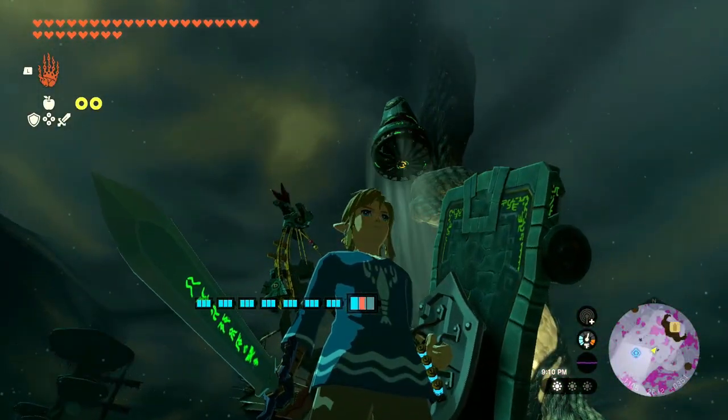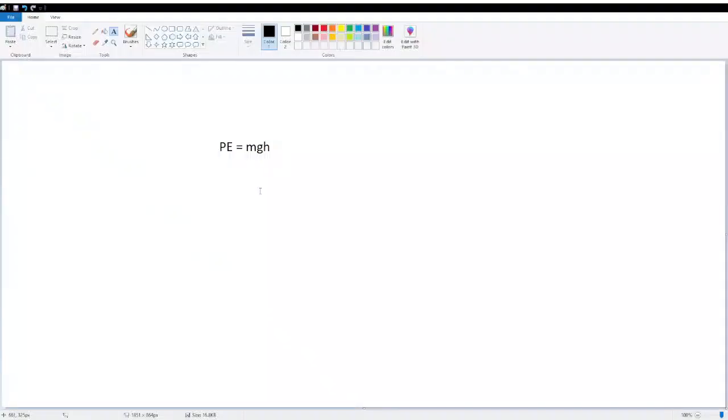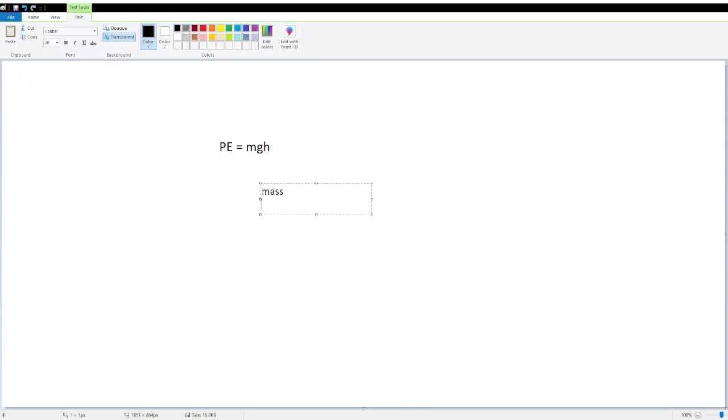Let's start by figuring out what variables we need to solve for potential energy. In order to calculate potential energy, we need to know three things: the mass of our object, the acceleration due to gravity of our system, and the height which the object is being lifted into the air.